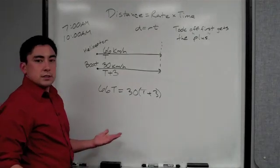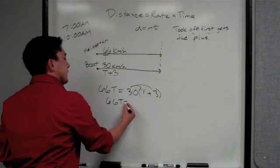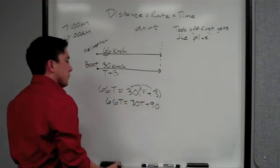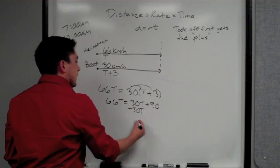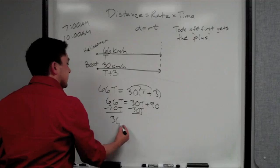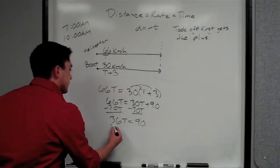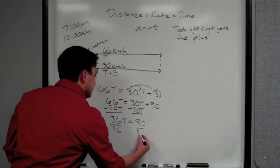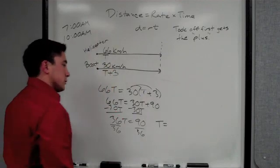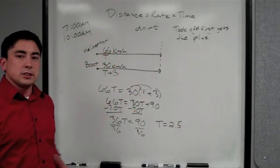This equation is a lot easier. We just distribute. So we have 66T equals 30T plus 90, because we distribute the 30. We subtract that. So you have 36T equals 90. And lastly, you divide by 36. T equals 2.5.